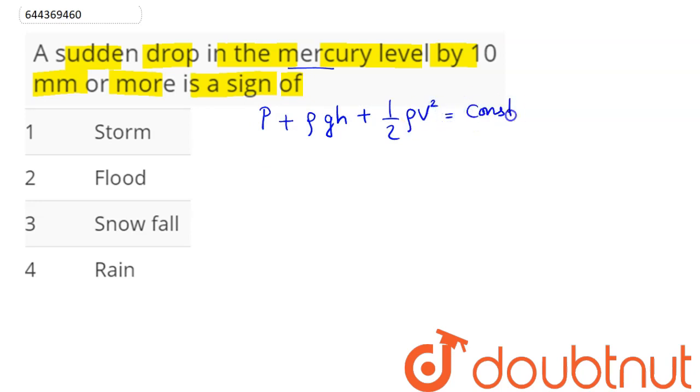Since pressure decreases, this results in an increase in velocity as the gravitational part remains constant. The wind is blowing with high velocity, indicating a storm is coming nearby.